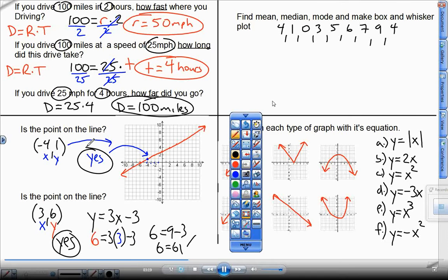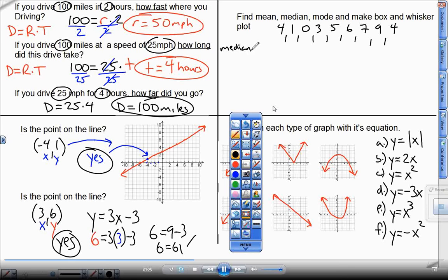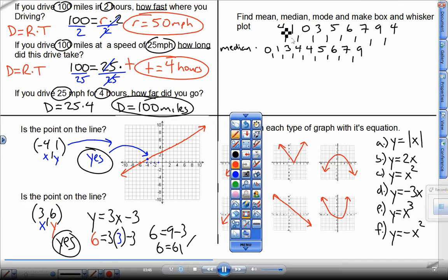Alright, mean, median, mode. So to find the median, I'm going to write them all in order. Very important. So 0, 1, I got a 3, I got two 4s, I got a 5, a 6, a 7, and a 9.